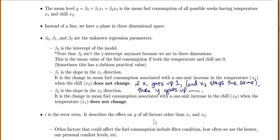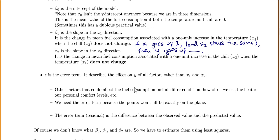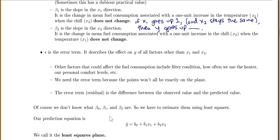It describes the effect on y of all of our other factors other than x1 and x2. So other factors that could affect it could be our filter condition, how often we use our heater, our personal comfort levels, etc. We need the error term because the points will not all be exactly on the plane. Just like before, the points weren't all exactly on our line. And the error term, the residual, is the difference between our observed value and our predicted value.